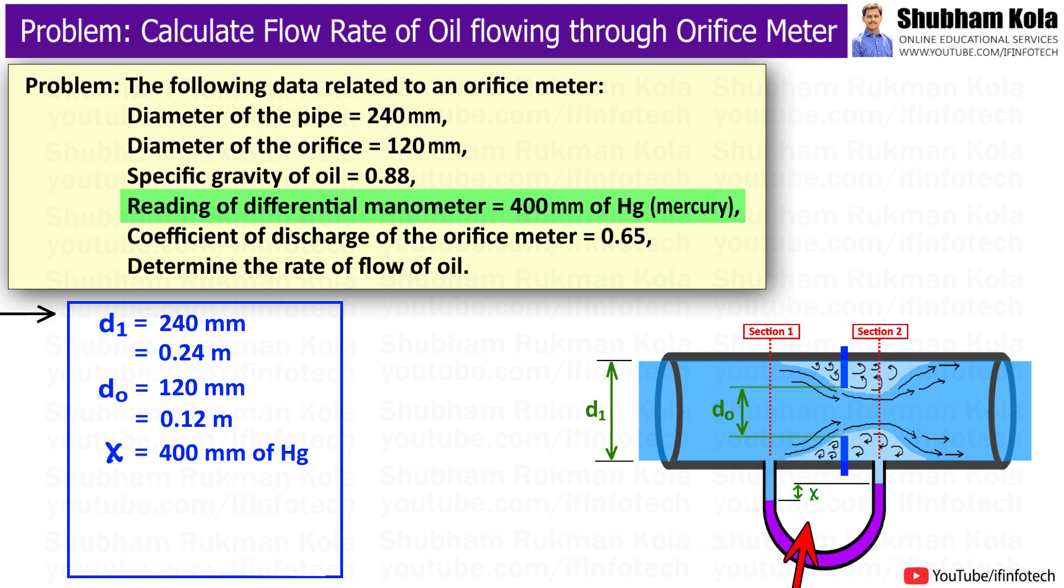Here, the differential manometer gives a reading of 400 mm of Hg. That means x equals 400 mm of Hg, that is equal to 0.4 meter of Hg. And the coefficient of discharge, that is Cd, is given as 0.65.